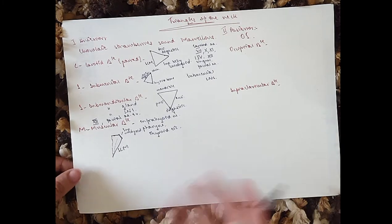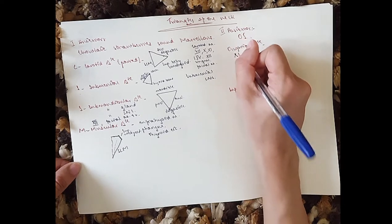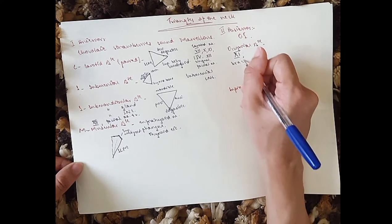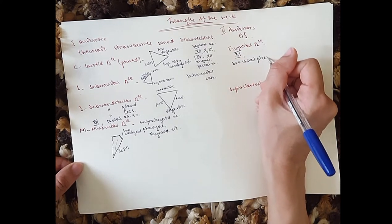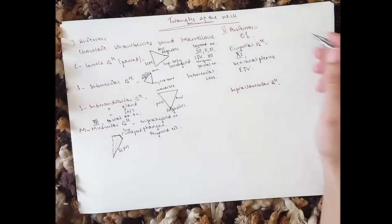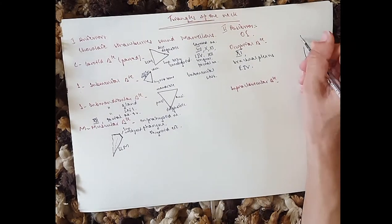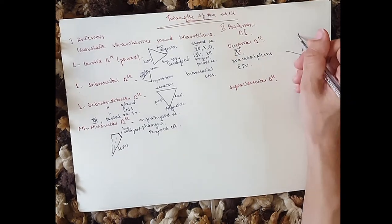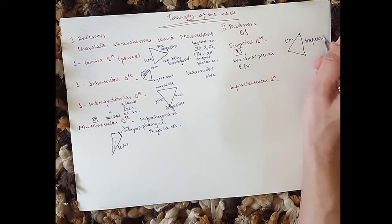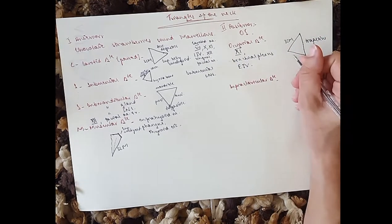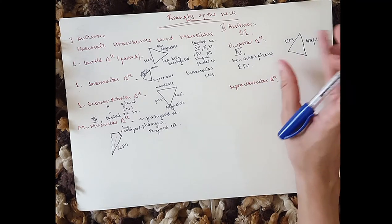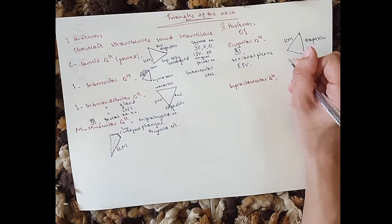For the occipital triangle, it consists of the accessory nerve, the supraclavicular nerve, and the transverse cervical nerve. The brachial plexus also crosses this space. We've got the external jugular vein — these are the main contents. For borders, we've got the trapezius, the omohyoid, and the sternocleidomastoid. These muscles are supplied by the accessory nerve, so if you know that, you can guess what's in the space and what muscles form the boundaries.